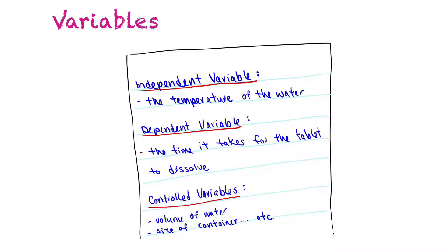If you wanted to be even more detailed, you would say what temperatures you were going to use — for example, starting from 10 degrees, every 10 degrees up to 60 degrees Celsius. Your dependent variable is what you're measuring or looking for. In this case, the dependent variable would be how long it takes for the tablet to dissolve, measured in seconds or minutes.